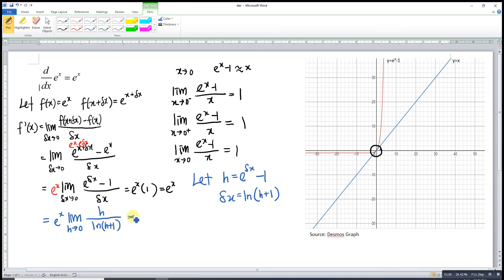So we just substitute ln(h + 1). Then we rearrange our equation. So we have 1 over h. 1 over 1 over h, we obtain h. Then ln(h + 1).